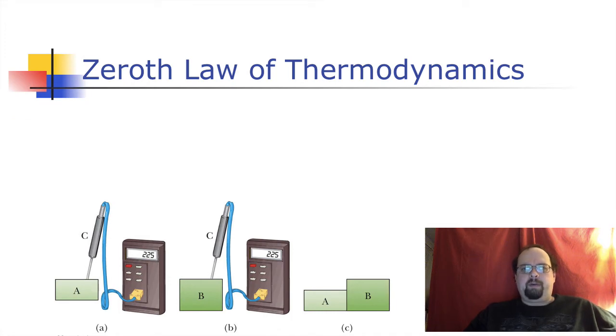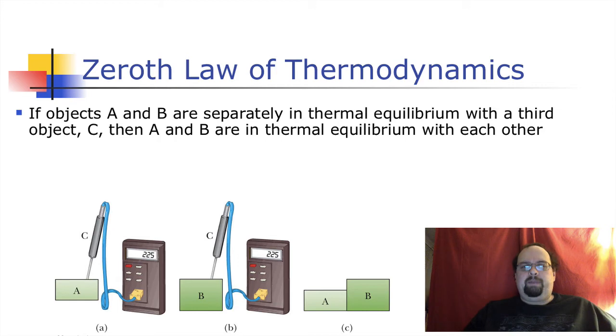So the zeroth law of thermodynamics. In general, there are going to be three laws of thermodynamics. This one came in late. And it was sort of an assumption from the beginning. So it's not really a law of thermodynamics, but like here's something important to know. And we'll call it the zeroth law of thermodynamics. Objects A and B are separately in thermal equilibrium with a third object C.